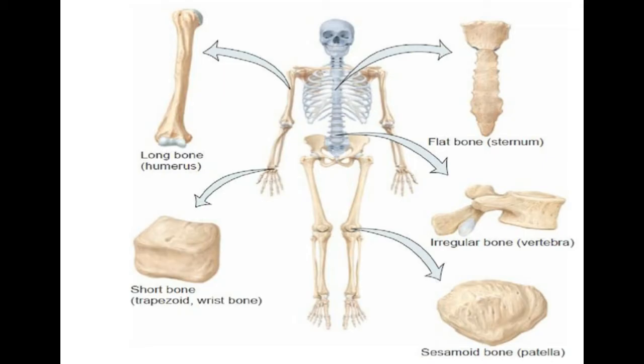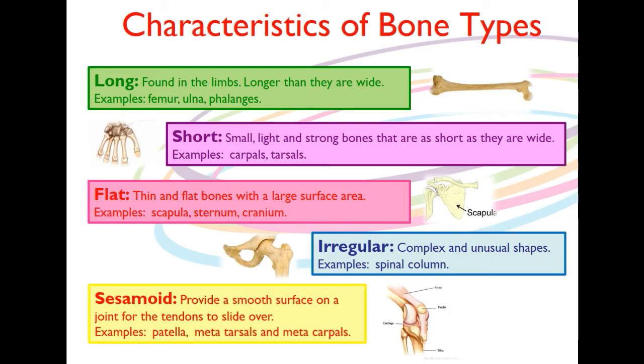Finally we have short bones. Short bones don't necessarily have to be really short — it's about the shape. Things like some of the bones around your wrist would be looked at as being short bones.